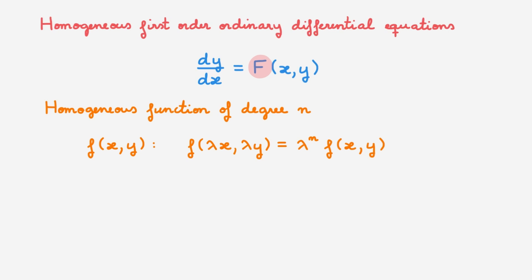Big warning here — pay close attention, this is where the definition gets a little bit convoluted. A homogeneous function can in general be of any degree n. However, the definition of a homogeneous first order differential equation states that the function f(x,y) has to be of degree 0. If f(x,y) was a general homogeneous function of a degree other than 0, say degree 2, then this would not be a homogeneous first order differential equation.